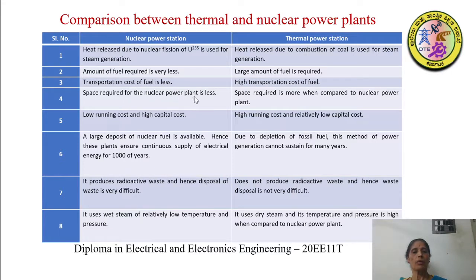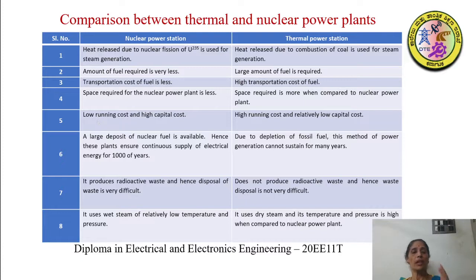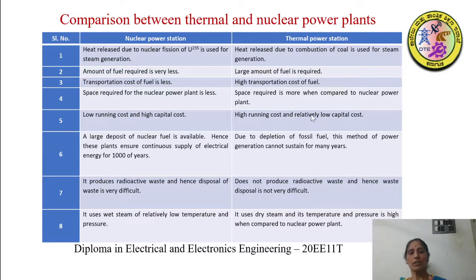Fifth: nuclear power plants have low running cost but high capital cost — the initial installation cost is high, but once installed, the running cost is low. In contrast, thermal power plants have a relatively high running cost but comparatively lower capital cost. For thermal, you have to keep transporting large amounts of fuel and keep burning it, so the running cost is very high.